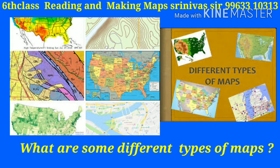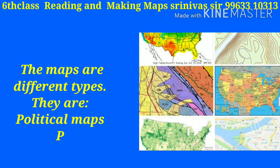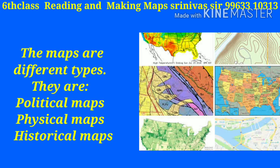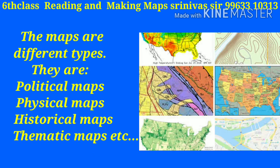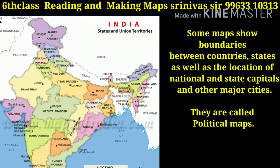What are some different types of maps? Maps are of different types: political maps, physical maps, historical maps, thematic maps, etc. Some maps show boundaries between countries and states, as well as the location of national and state capitals and other major cities — these are called political maps.